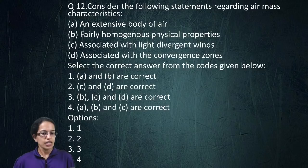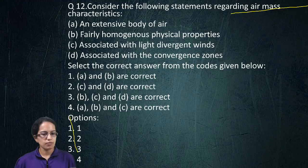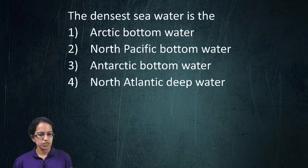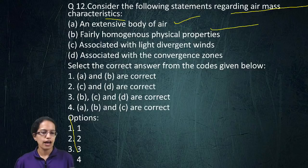The next question talks about air mass characteristics. An air mass is definitely an extensive, large body that is homogeneous in characteristics in terms of temperature. So A and B are the right options for this question.